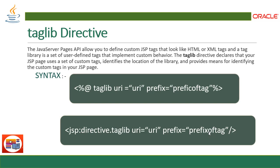The JSP API allows you to define custom JSP tags that look like HTML or XML tags. A tag library is a set of user-defined tags that implement custom behavior. The tag library directive declares that your JSP uses a set of custom tags, identifies the location of the library, and provides means to identify the custom tags in your JSP page. We are making our own tag — beyond the standard HTML tags like head, body, and style — using the tag library to define custom tag behavior.